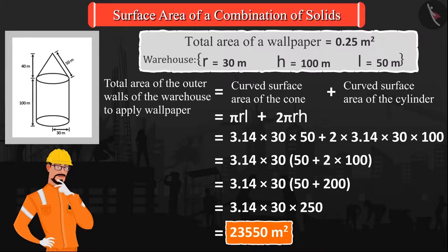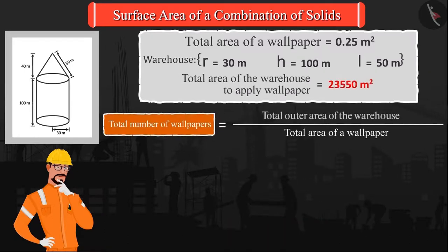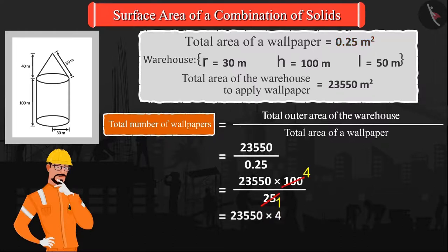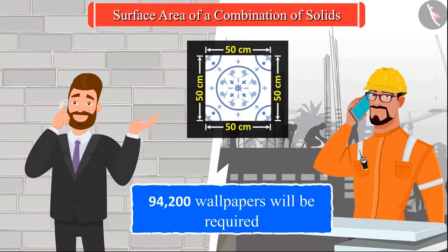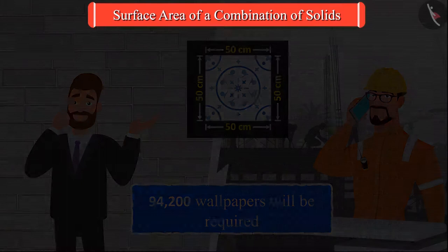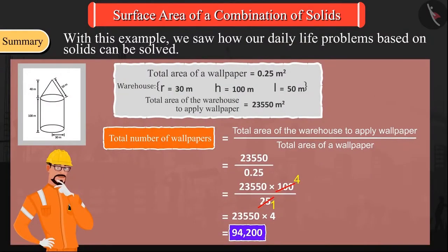We divide this area by the area of one wallpaper to get the total number of wallpapers needed. The engineer calls the general manager and tells him that he will need a total of 94,200 wallpapers. With this example we saw how daily life problems based on solids can be solved.